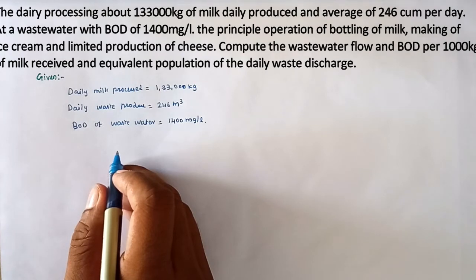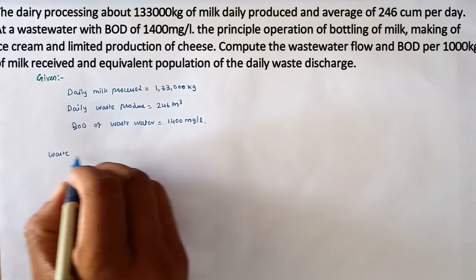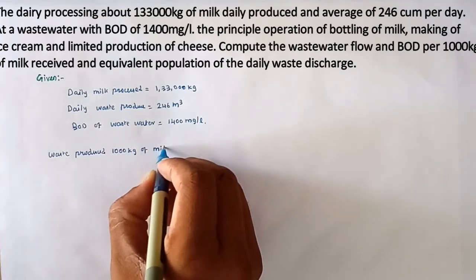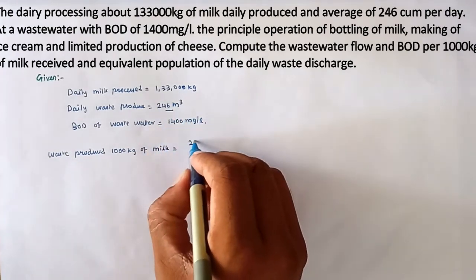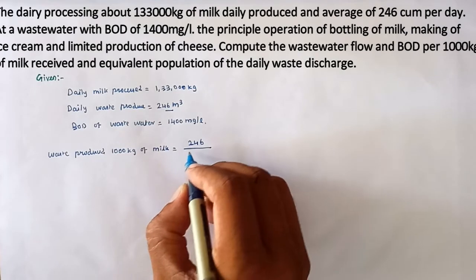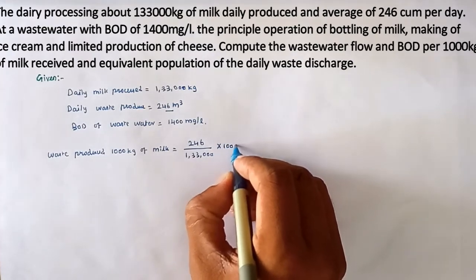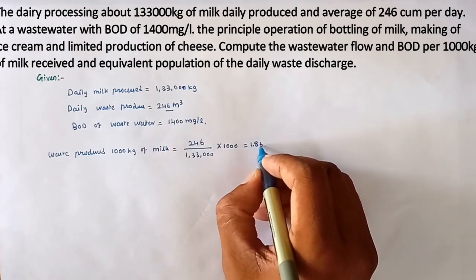First we have to find the waste produced per 1000 kg of milk and the BOD and the equivalent population of daily waste discharge. The daily waste produced per 1000 kg of milk equals 246 divided by 133,000 kg, into 1000 kg, which gives a value of 1.85 cubic meters.